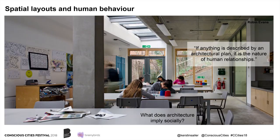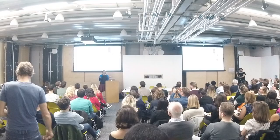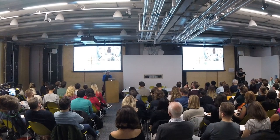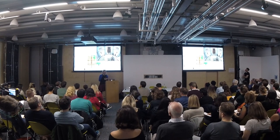My research interest is in spatial layouts and human behavior. This is a quote from Robin Evans, who argues that if anything is described by an architectural plan, it is the nature of human relationships. That's quite interesting, because when you ask architects what a plan describes, they would say functions, walls, spaces, and different areas — but they certainly wouldn't speak of it as expressing human relationships. Yet that is exactly the interest I'm pursuing: to understand what architecture implies socially.